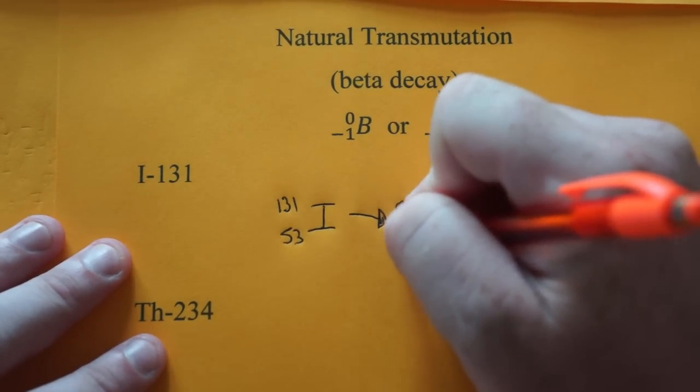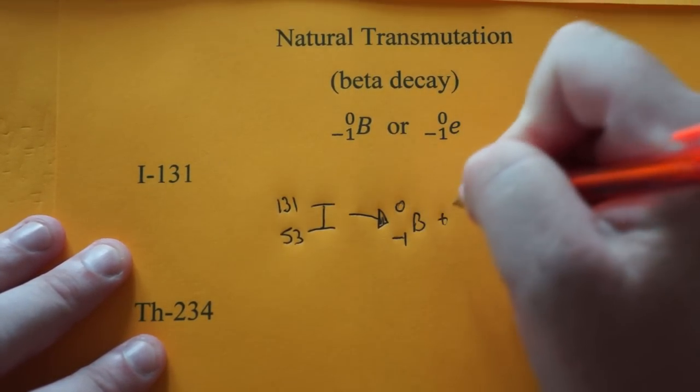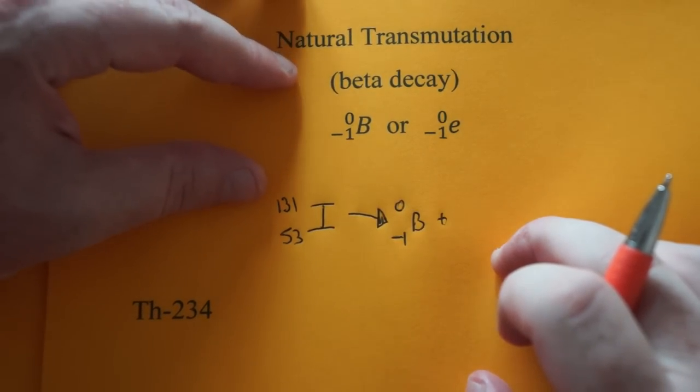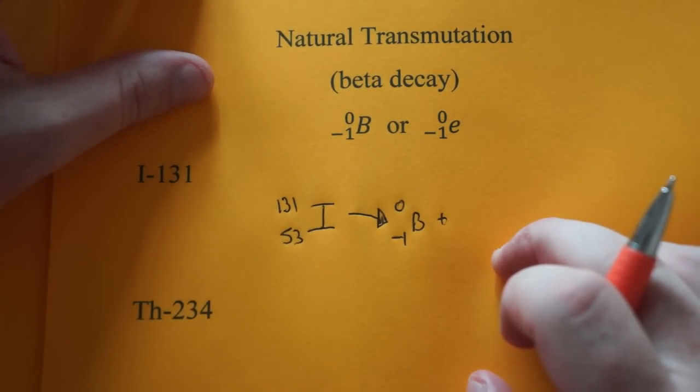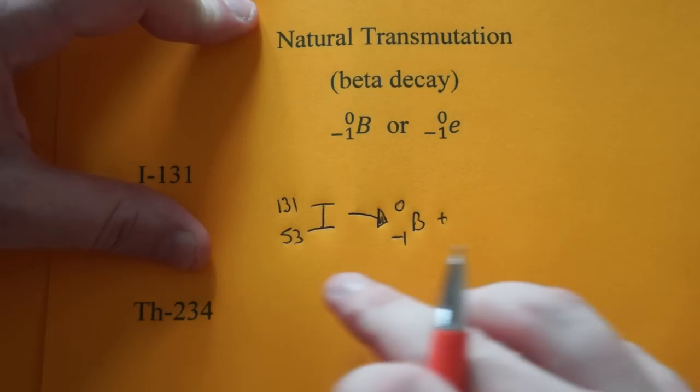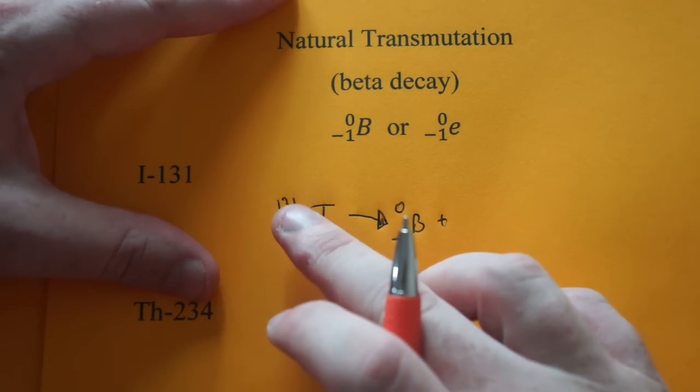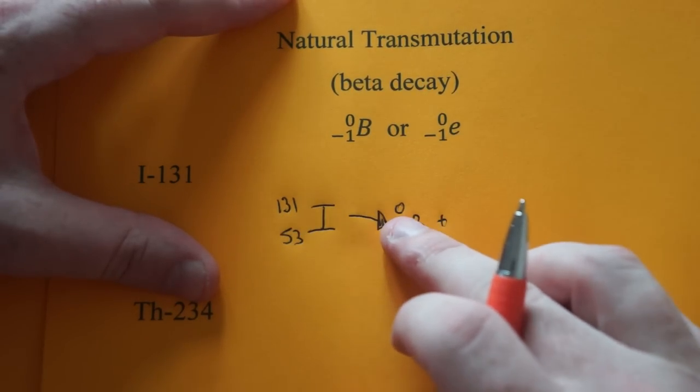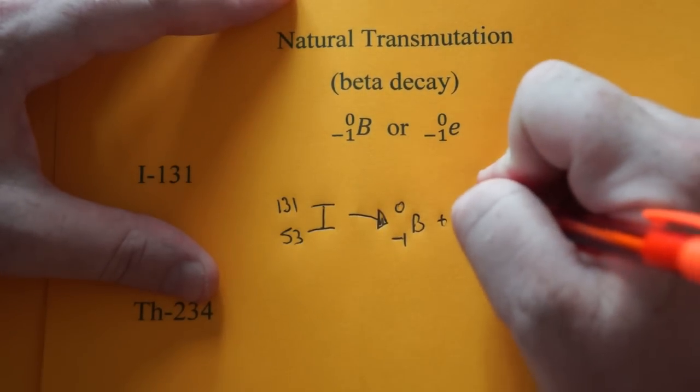And then we're going to write our beta particle. The beta particle is formed when a neutron kicks off a negative particle and turns into a proton. So what we're going to do here is we're just going to make sure that the mass before equals the mass after. So 131 is equal to zero plus 131.